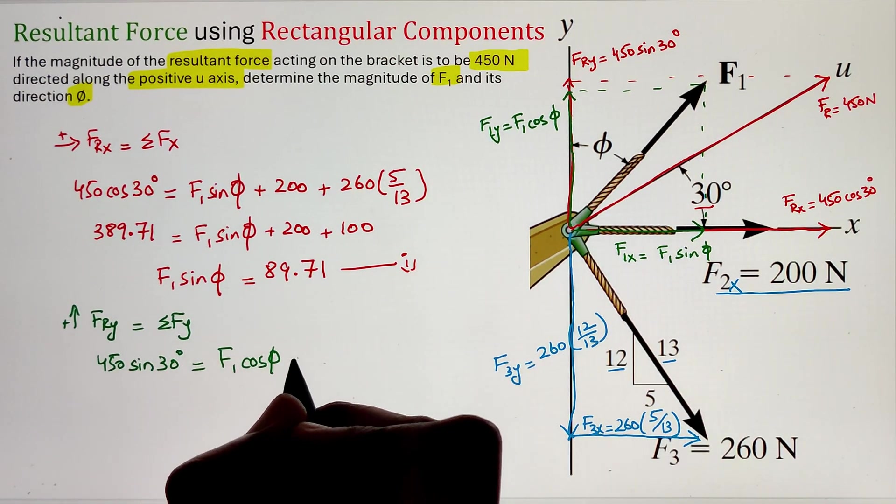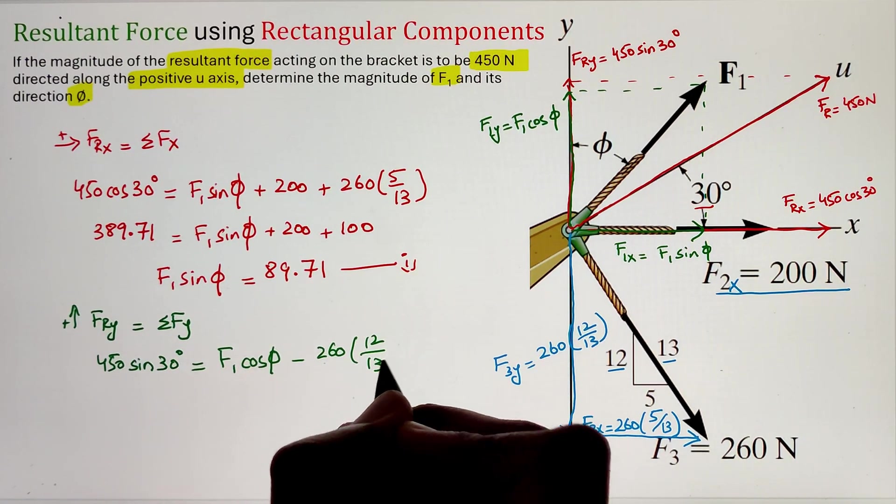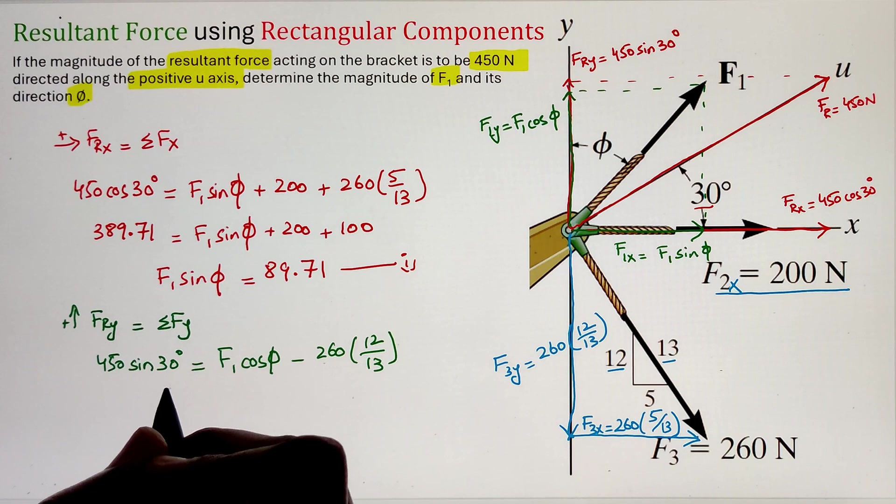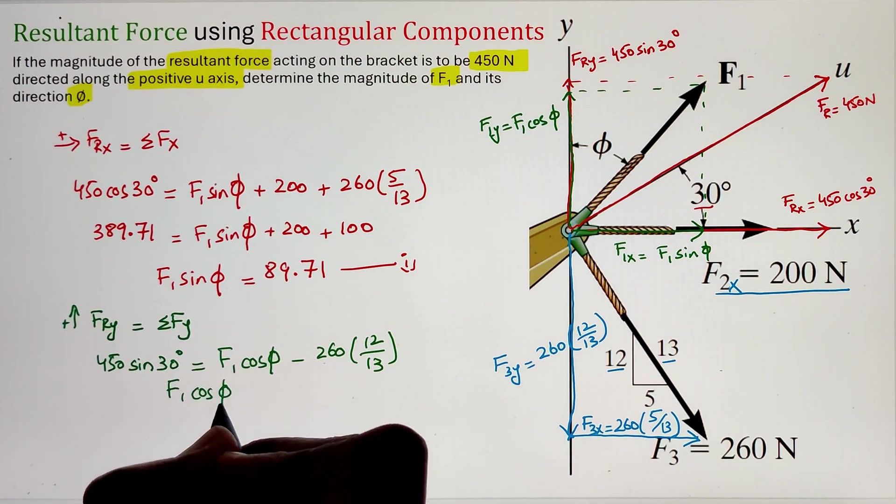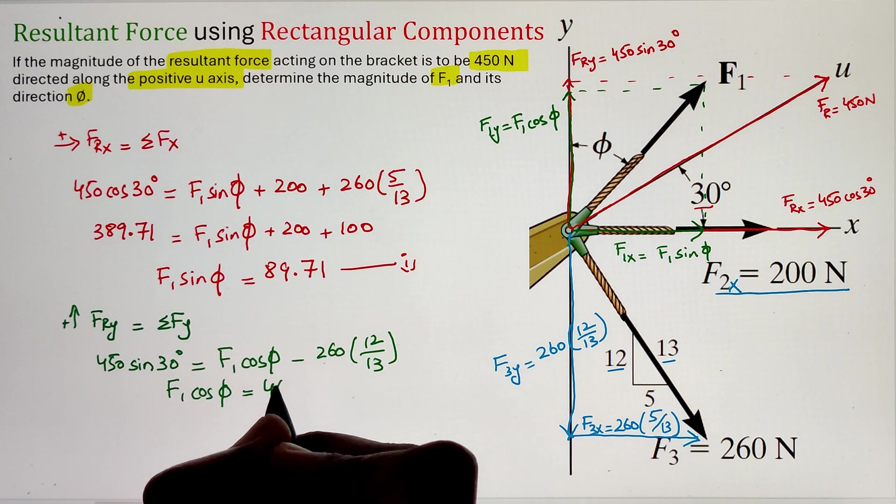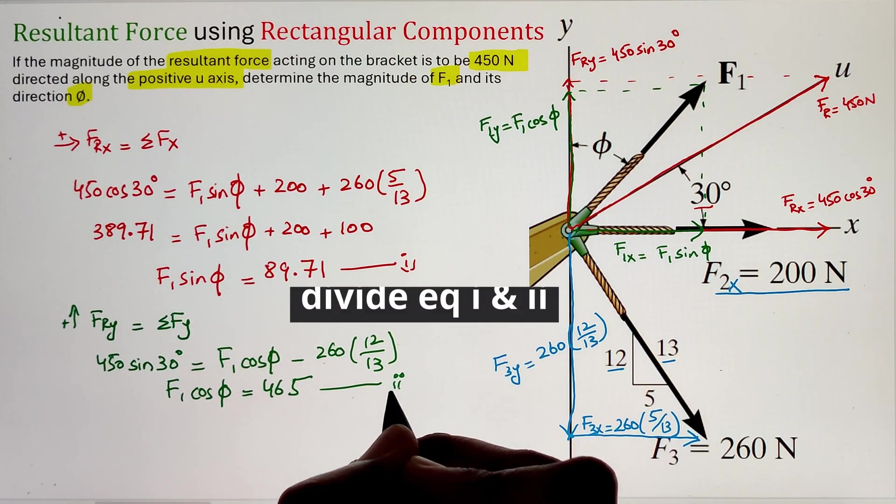Since F1 is going upward, it is taken as positive, whereas the F3y is going in the downward direction, so we have taken it as negative based on our sign convention. Simplifying, we get our equation 2 of F1 cosine phi equals 465.